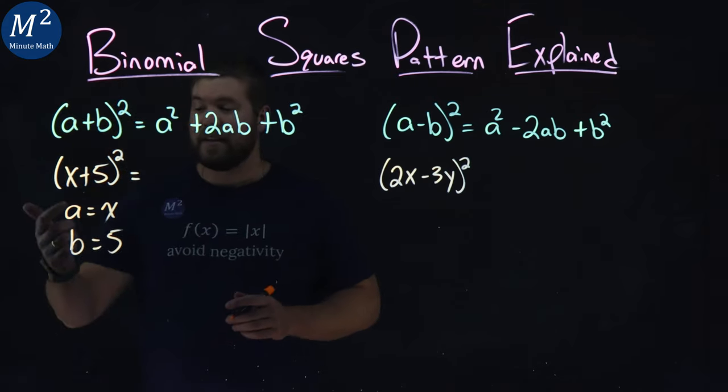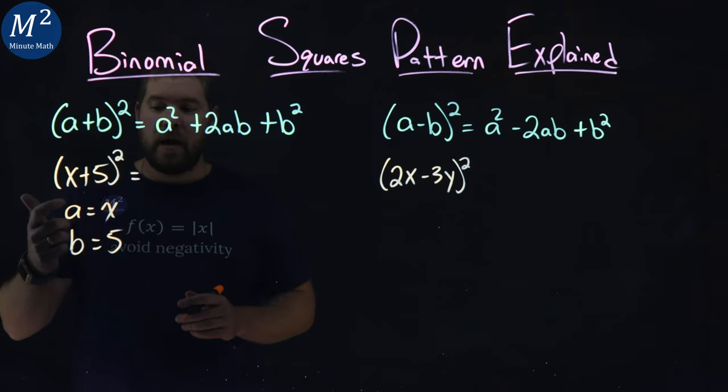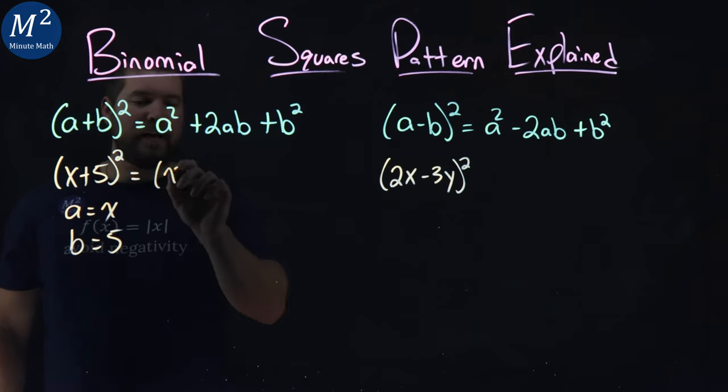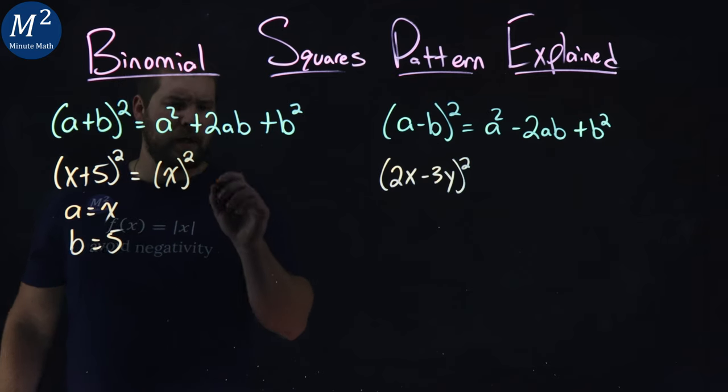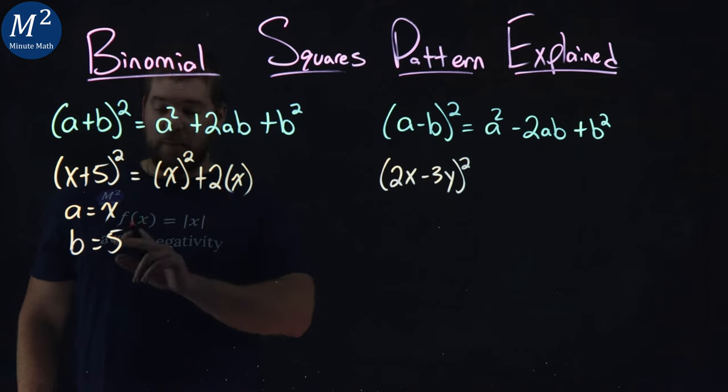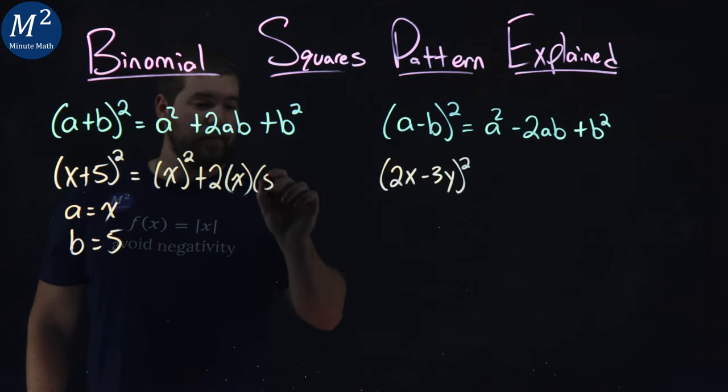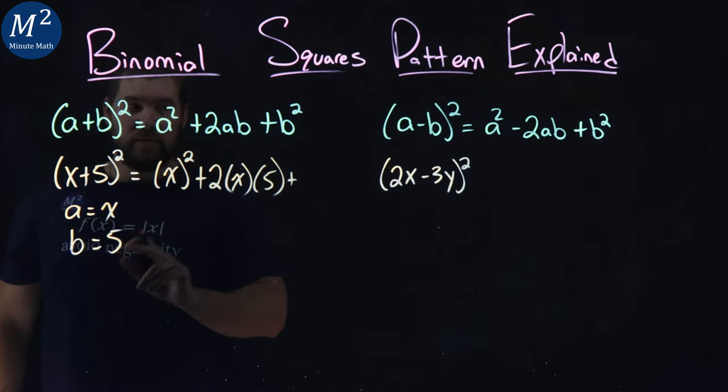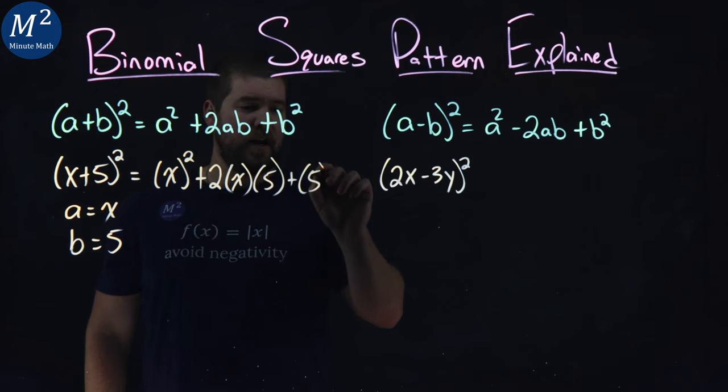And now it's just like a plug and play kind of operation. a is x, so we have an x squared right there. Plus 2 times my a value, which is x. b value, 5. Plus, last one, b value is 5 all squared.